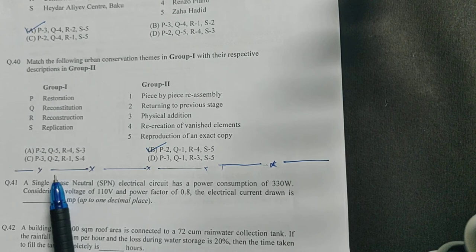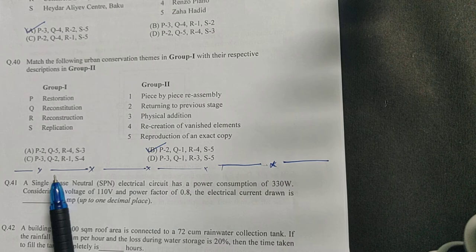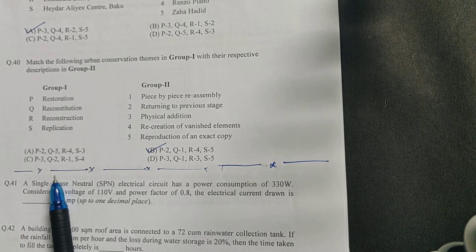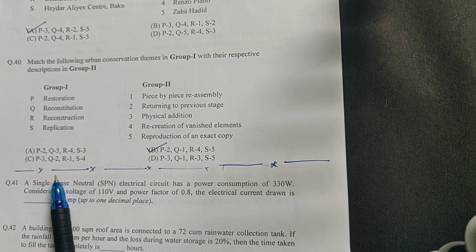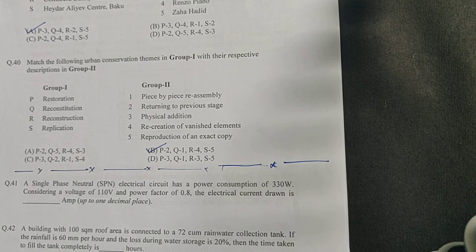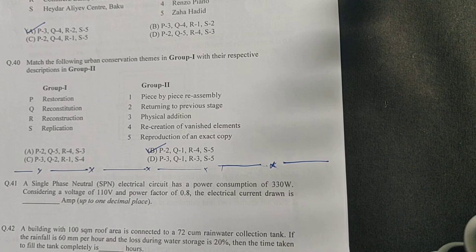Then there is reconstruction. Reconstruction means recreation of vanished elements. Some part of the building is missing, you make it artificially or in modern technique and then keep it at that same position so that the natural form of the building is not corrupted. The last is replication. As the word says, you try to copy, so it is the representation of an exact copy.